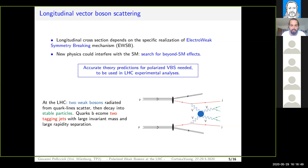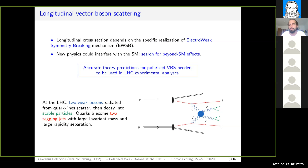If new physics is present — so far we have not seen it, but it could be present — it could interfere with the Standard Model, and in particular it could interfere in this delicate balance between large contribution cancellations, and push the restoration of unitarity to higher values above the test scale. This motivates the importance of VBS, vector boson scattering, for the search for beyond Standard Model effects.